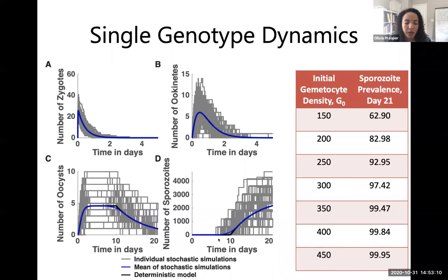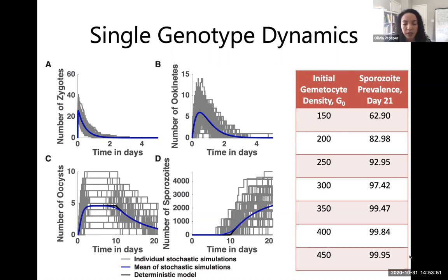There is substantial variation across mosquitoes: in some, the parasite persists to day 21 and the mosquito becomes infectious; in others, the parasite dies out before reaching the sporozoite stage. Starting with a low gametocyte density, about 63% of simulated mosquitoes become infectious by day 21, whereas with high gametocyte density, almost all mosquitoes are infectious by day 21. This variation is critically important for accurately capturing parasite diversity at the oocyst and sporozoite stages.